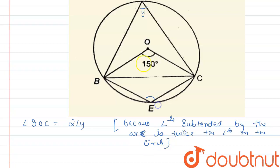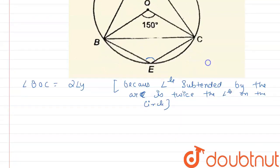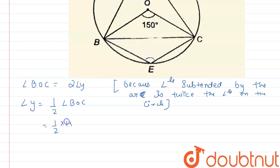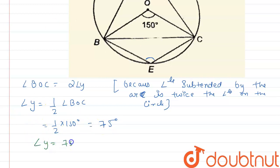Now here we get angle BOC is 150 degrees. So angle Y equals half of angle BOC. Angle Y equals half of 150 degrees, which gives us 75 degrees. So angle Y is equal to 75 degrees.